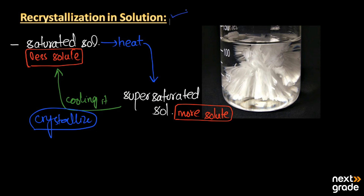As you can see in this picture, there was a solution with more solute particles, and we cooled it down. Upon cooling, crystals of the solute started to form. This is the simple recrystallization of the solution.